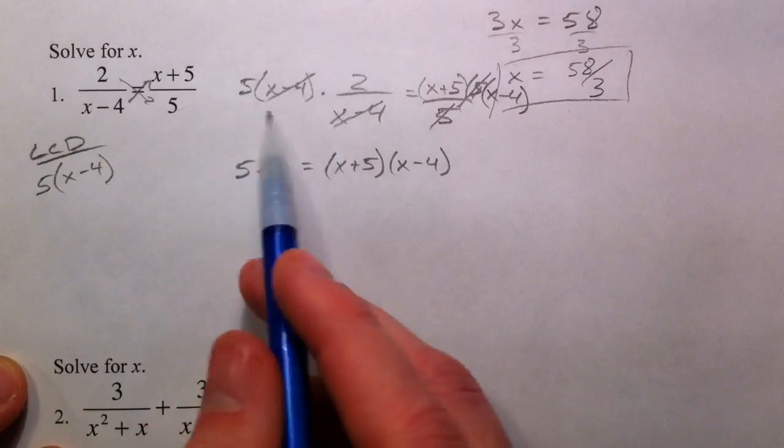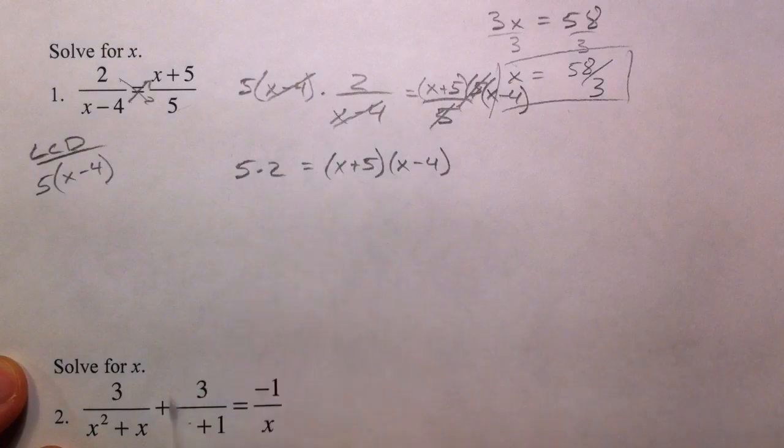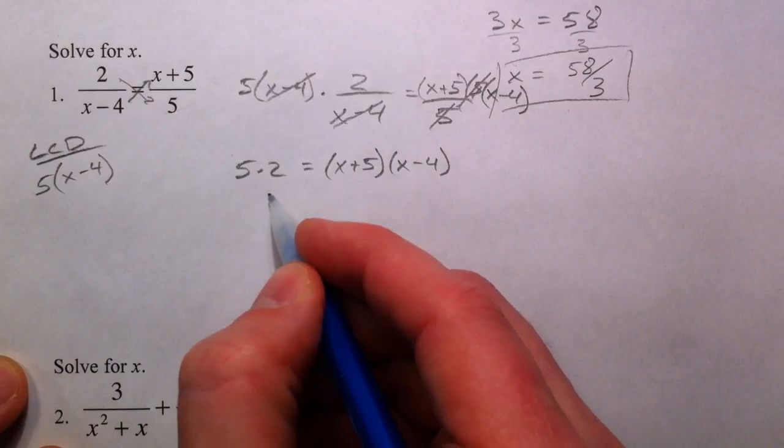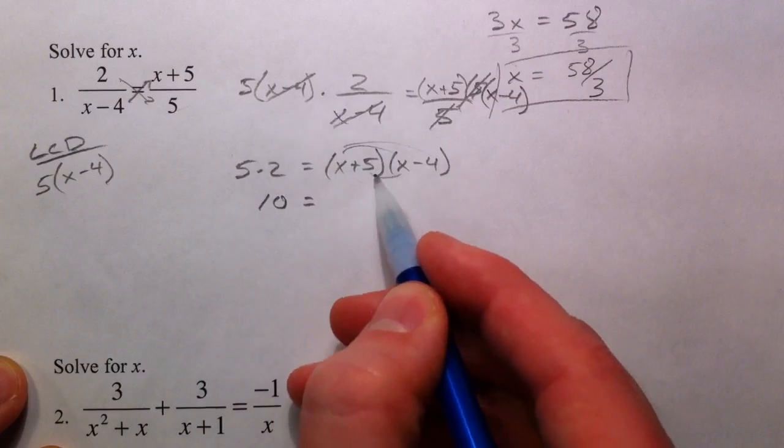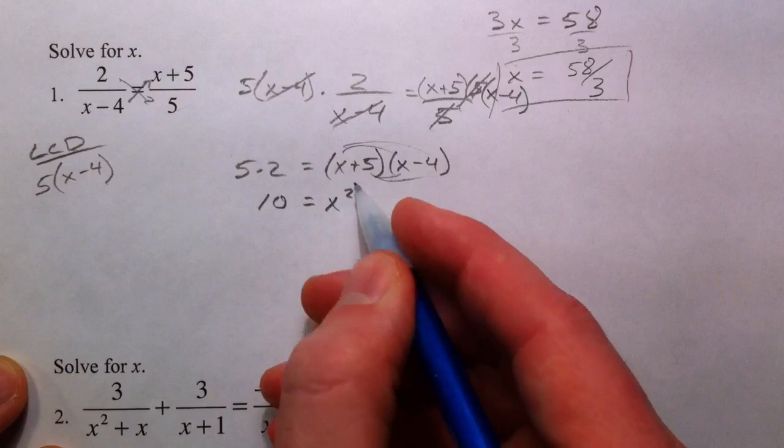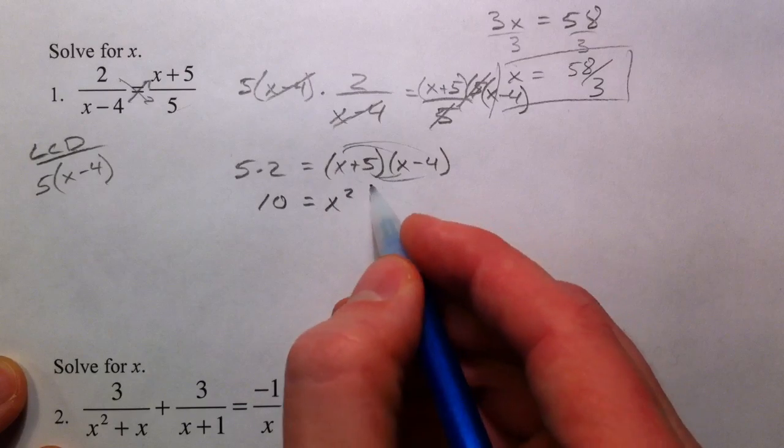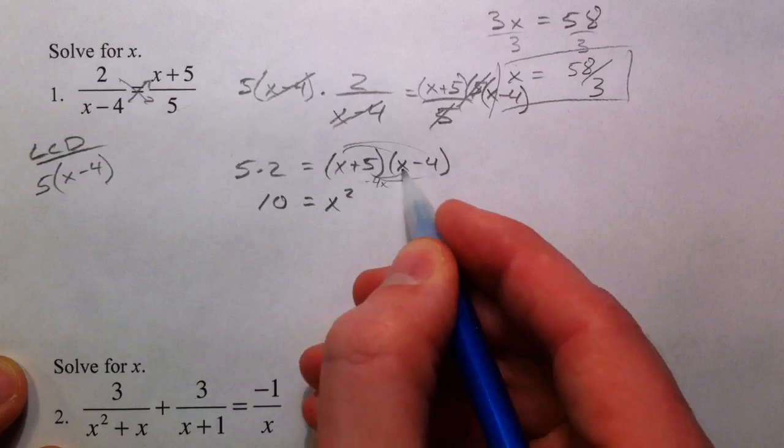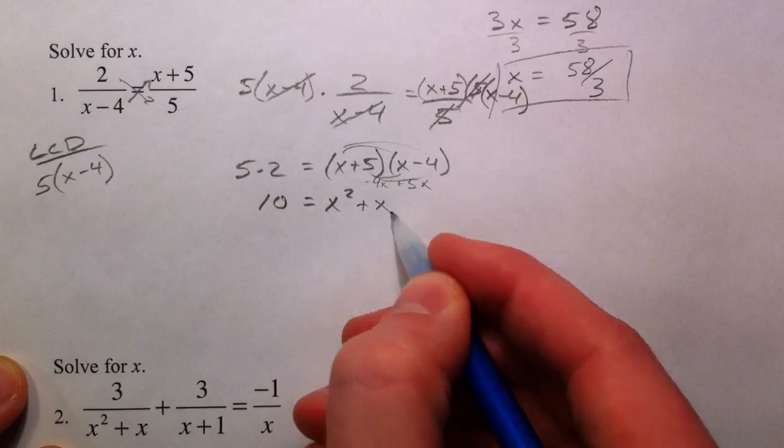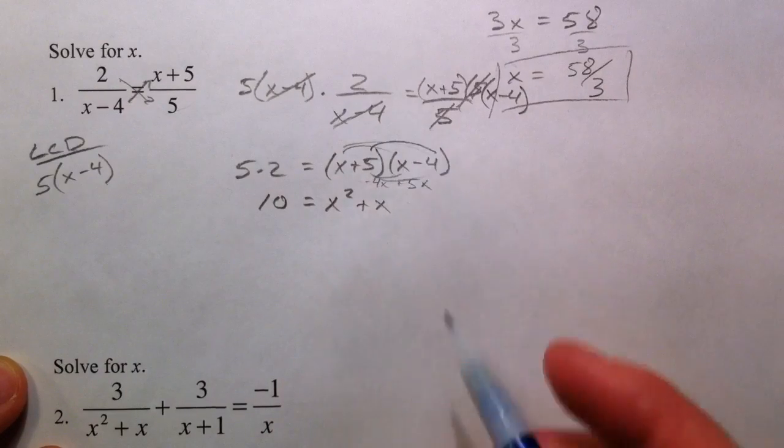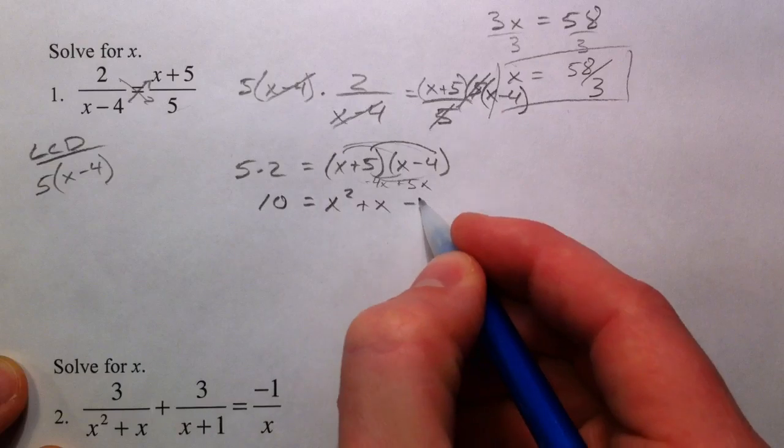Let's simplify this a little bit. Multiply this out, you get x squared, x times negative 4 is negative 4x, we get a 5x, so together that makes plus 1x, and then 5 times negative 4 is negative 20.